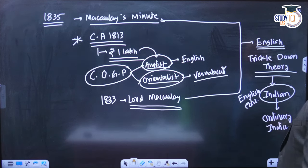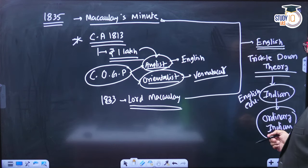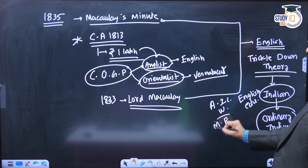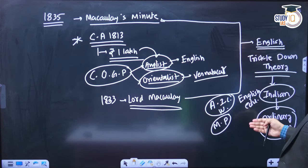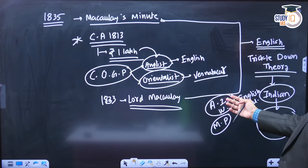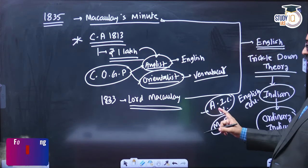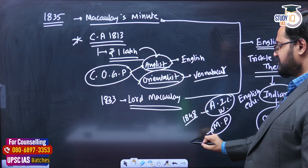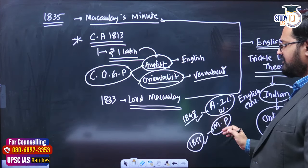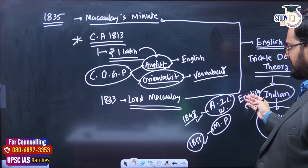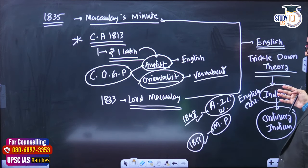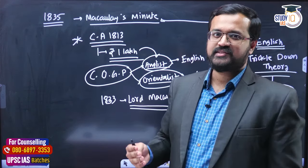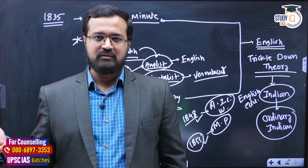Clear examples of this trickle-down theory are Acharya Ishvachandra Vidyasagar and Mahatma Phule - both products of this system. Taught in an anglicized version, Vidyasagar opened the first girls' school in our country in 1848, and Mahatma Phule opened the first girls' educational institution for lower-class girls in 1851. Britishers educated these handful of Indians who then took education to ordinary people. This policy was fairly successful to a large extent, but ultimately not sufficient enough.